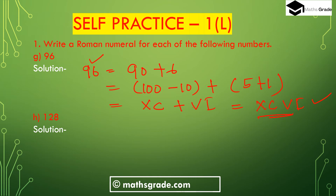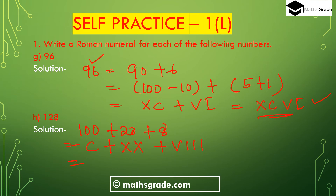Part (h): 128. We write 128 as 100 plus 20 plus 8. Here 100 is C, 20 is 10 plus 10 which is XX, and 8 is 5 plus 3, which is VIII. Combining them: C plus XX plus VIII gives CXXVIII. So the Roman numeral of 128 is CXXVIII.